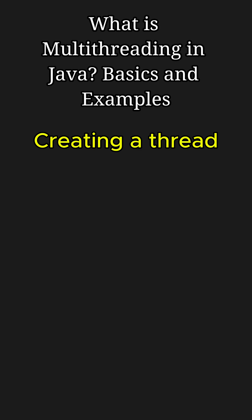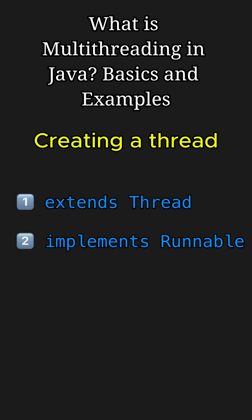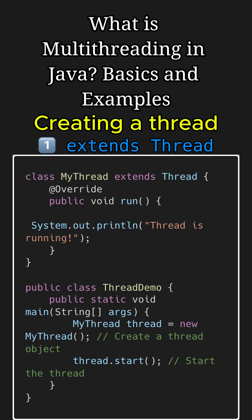In Java, you can implement threads by either extending the Thread class or implementing the Runnable interface. First, let's look at thread creation by extending the Thread class. Here we create a custom thread by extending the Thread class and overriding its run method, then call the start method to activate the thread, triggering the run method to execute in parallel.